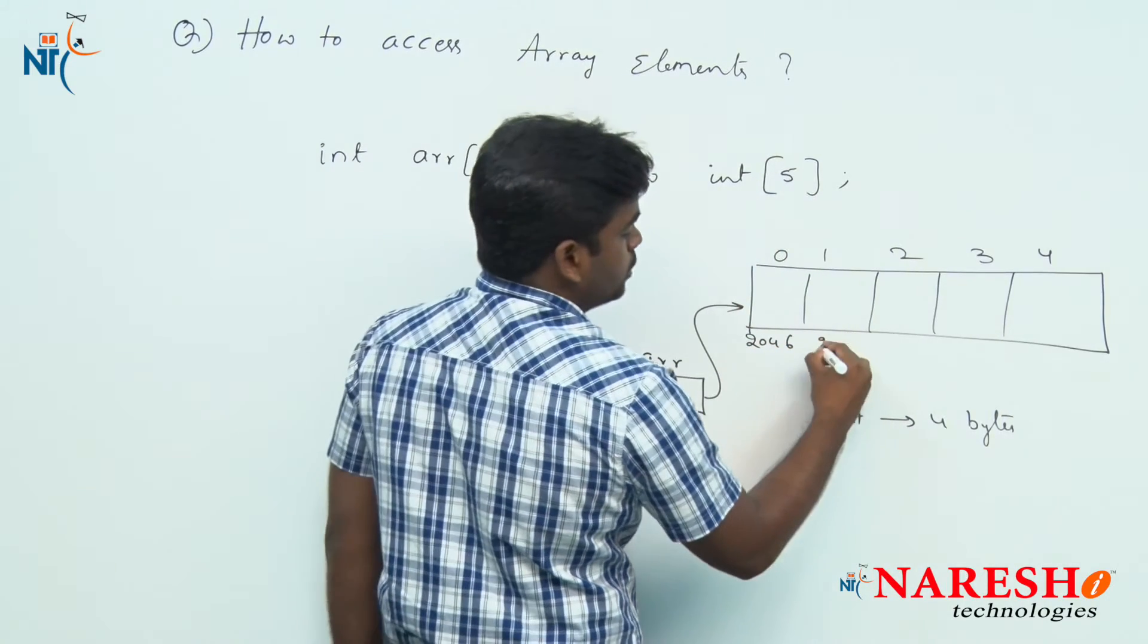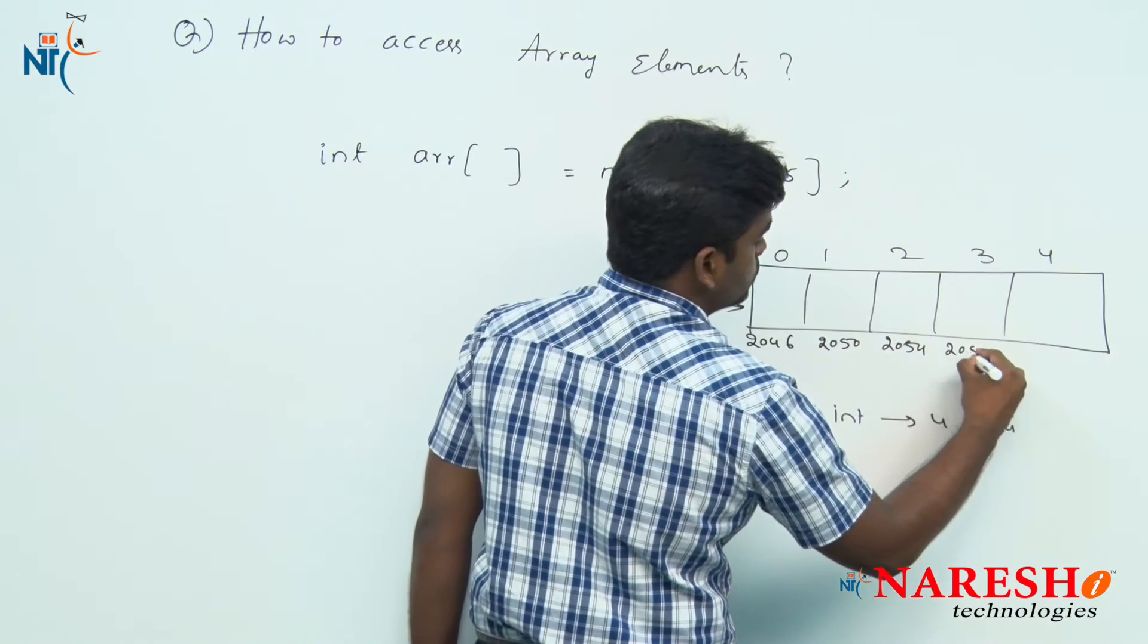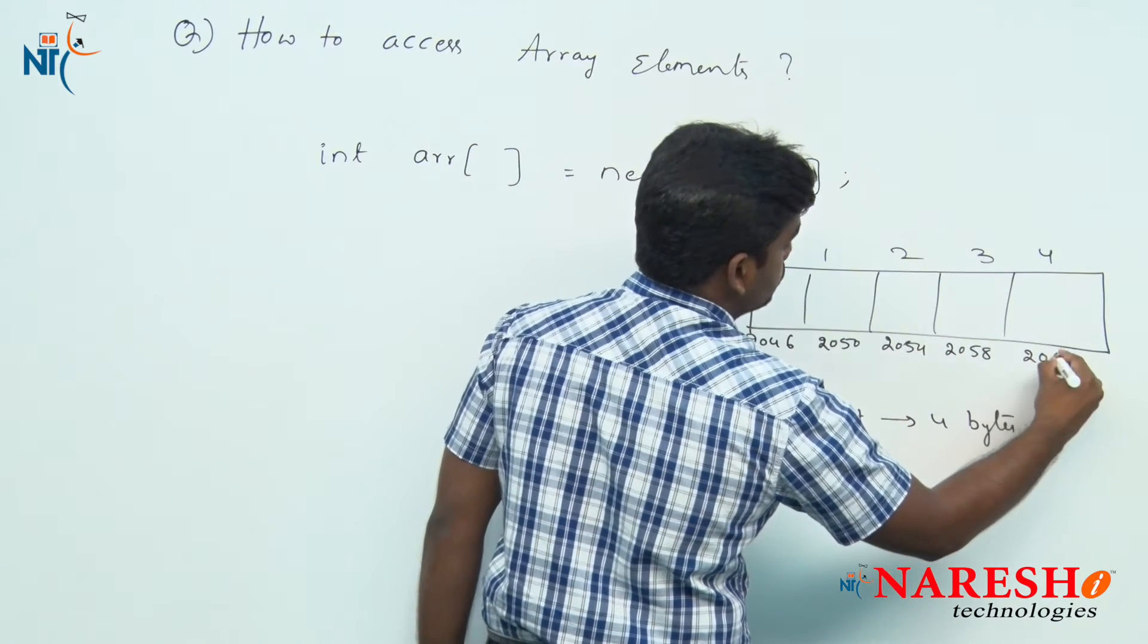2046 plus 4 is 2050, 2054, 2058, 2062, it is like that.